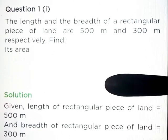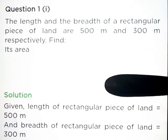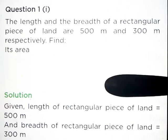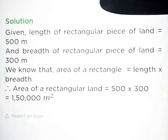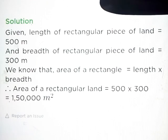Hello friends, today we are going to learn Exercise 11.1. Question number 1, part A. The length and breadth of a rectangular piece of land are 500 meter and 300 meter respectively. Find its area. Given: length of a rectangular piece of land is equal to 500 meter and breadth of a rectangular piece of land is equal to 300 meter.